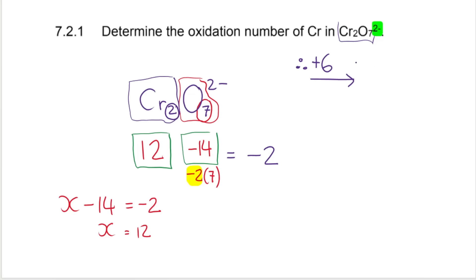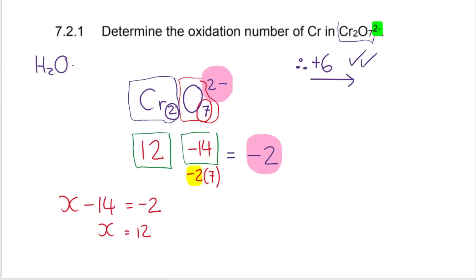What's nice about these questions is they give you two marks with just the answer — you don't have to show the working out, but I do find it useful to do the working out instead of guessing. Just take note: if the charge on the ion was minus 3, then this would equal minus 3. If it was plus 1, it would equal plus 1. That's why neutral compounds like H₂O have no charge here, so it must equal zero.